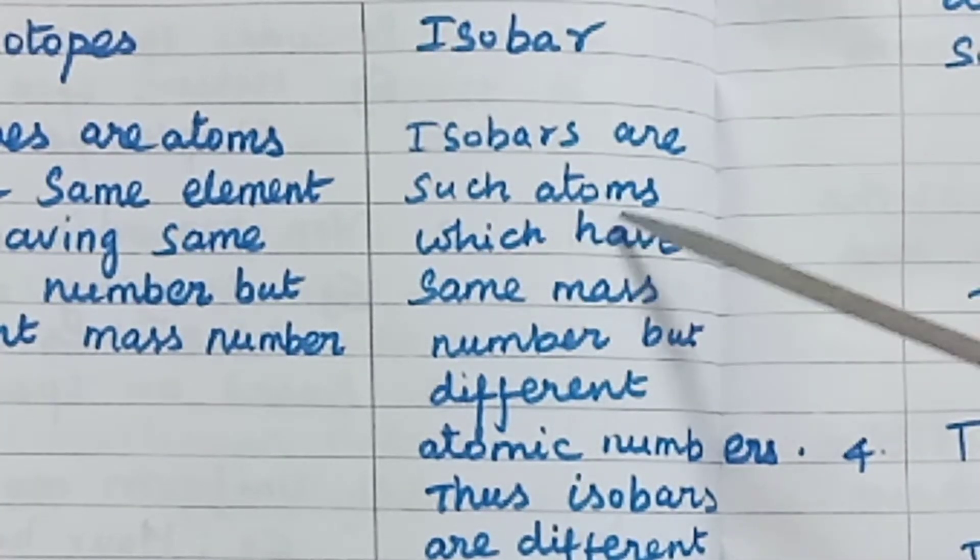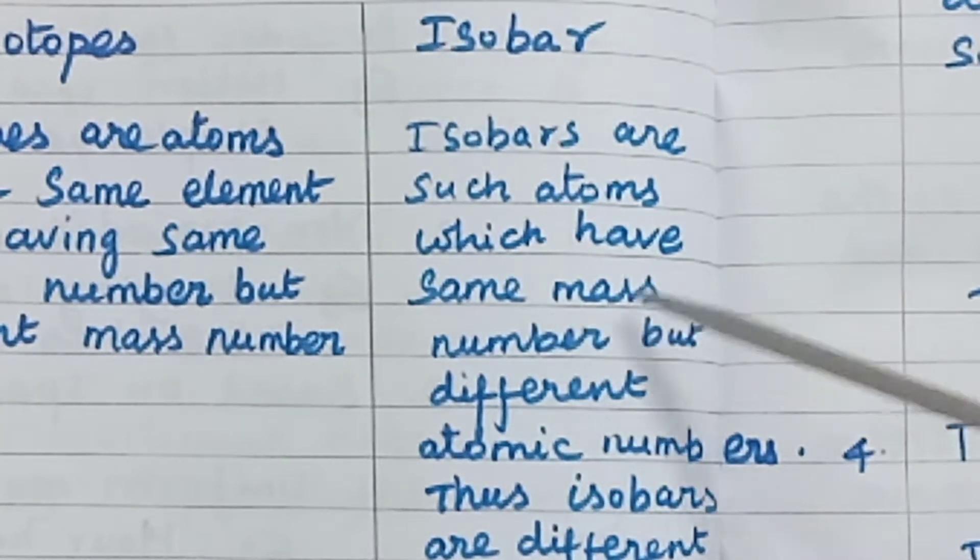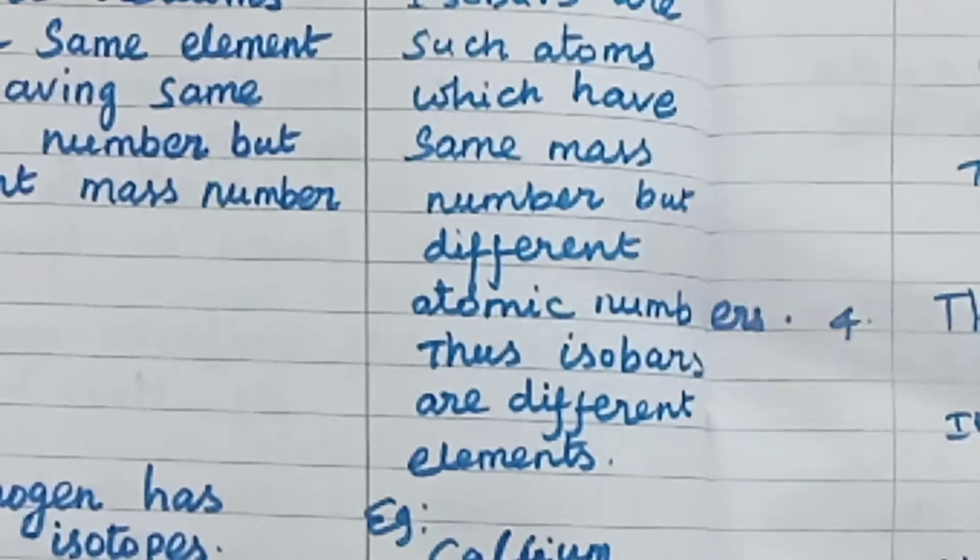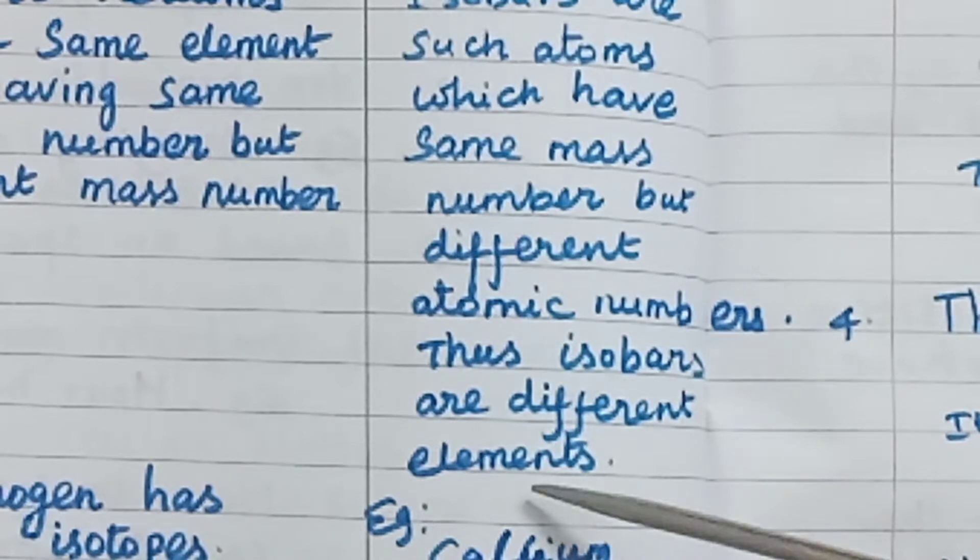Isobars are such atoms which have same mass number but different atomic numbers. Thus isobars are different elements.